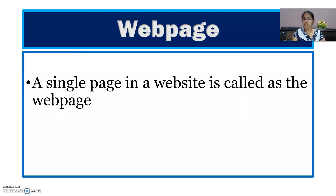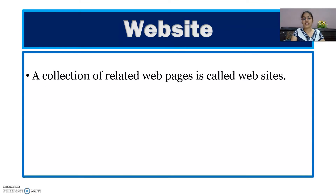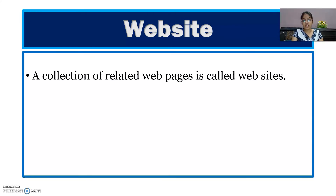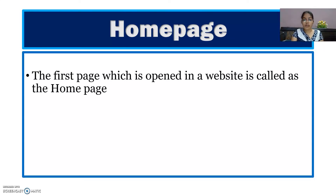Next is web page. When you search anything on the internet, the page that opens is known as the web page. A single page in a website is called a web page. A collection of related web pages is called a website. The first page which is opened in a website is called its homepage.